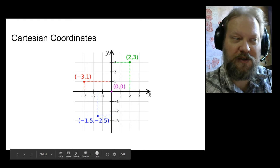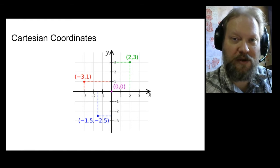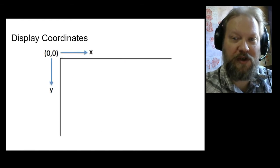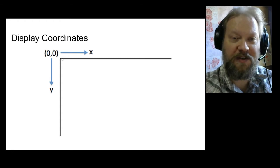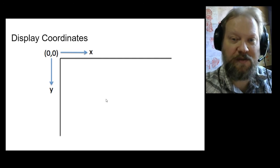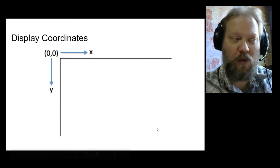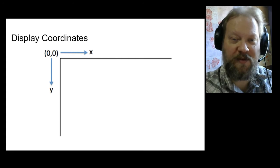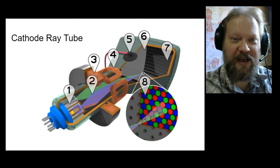Now that's probably what you're most used to. But in computer graphics, we usually work in what we call display coordinates, where the origin is in the upper left-hand corner, the x-axis increases to the right, and the y-axis increases in a downward direction. You might be wondering why this came to be. Well, in order to understand that, we have to look at the cathode ray tube.